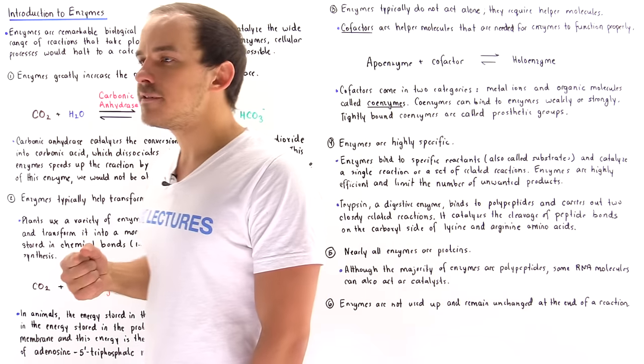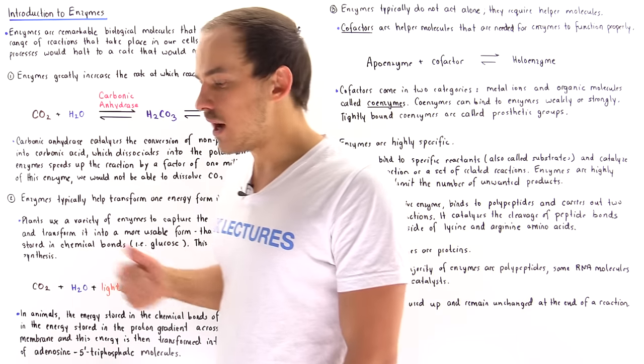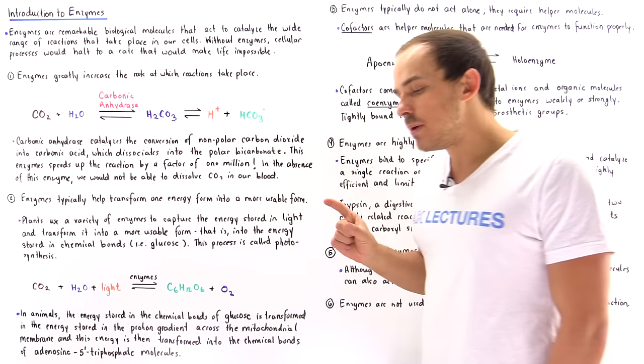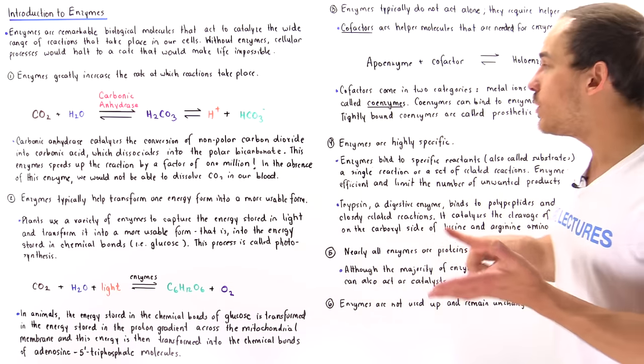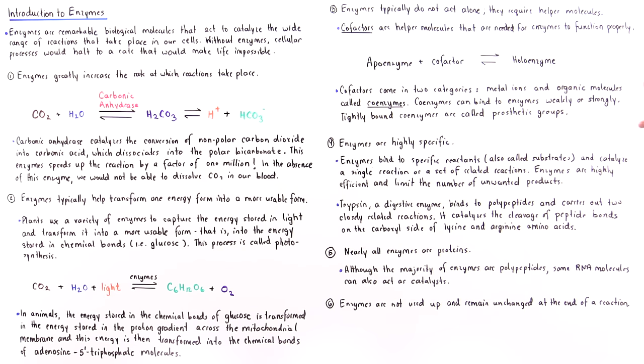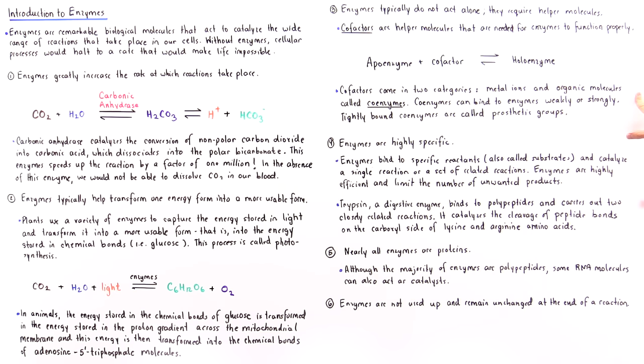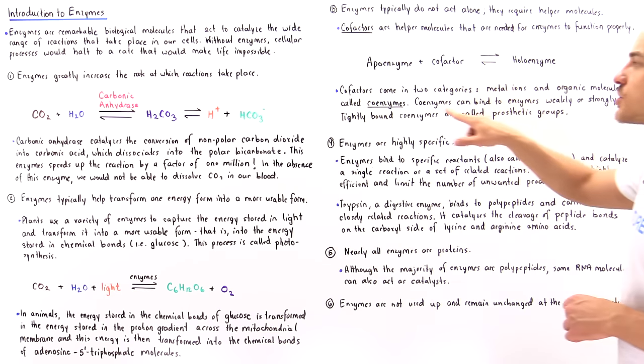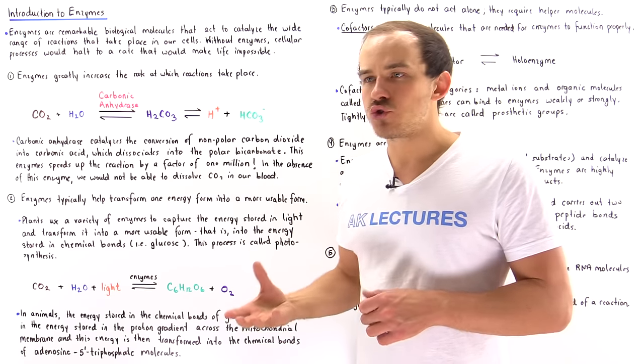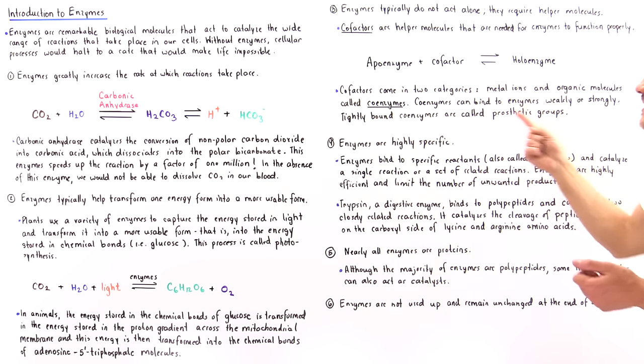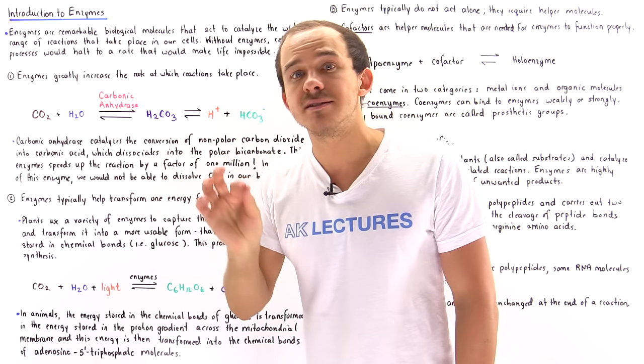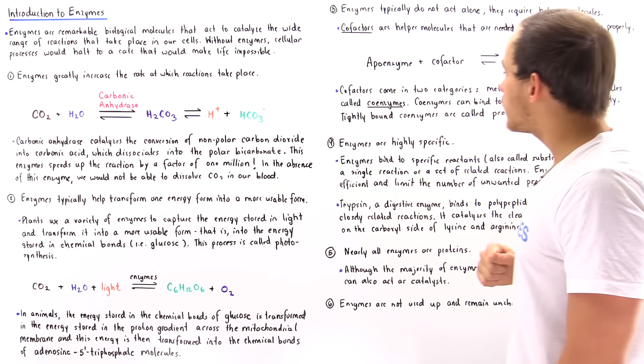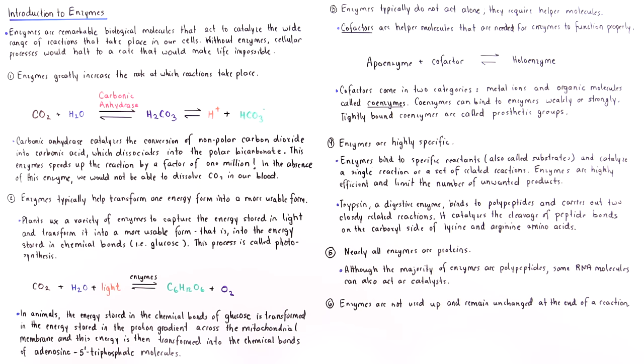Now we have many different types of cofactors as we'll eventually see, but we can categorize cofactors into two groups. We have metal ions and we also have organic molecules known as coenzymes that are usually formed from vitamins. Now one example of a metal ion that acts as a cofactor for carbonic anhydrase is the zinc atom, and we'll talk about that in detail in a future lecture.